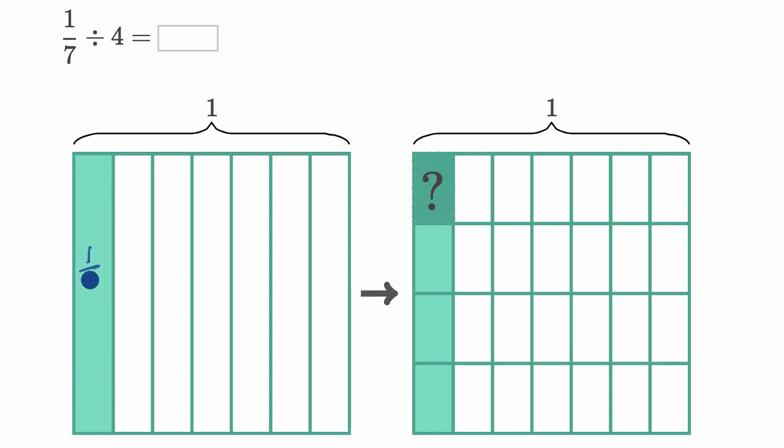So this is 1/7 right over here, and then they divide it into four equal sections. In fact, they divide all of the sevenths into four equal sections, and so 1/7, which is this whole green bar, divided by four, well, that would be this fraction of the whole that is in a question mark.